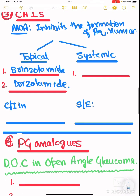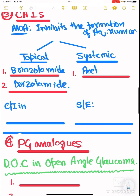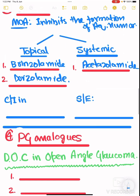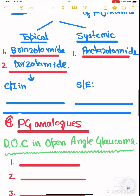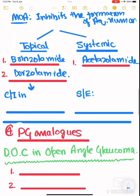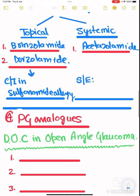In the systemic case, it is acetazolamide. The contraindication of topical carbonic anhydrase inhibitors is sulfonamide allergy. The side effect of systemic carbonic anhydrase inhibitors is choroidal effusion.